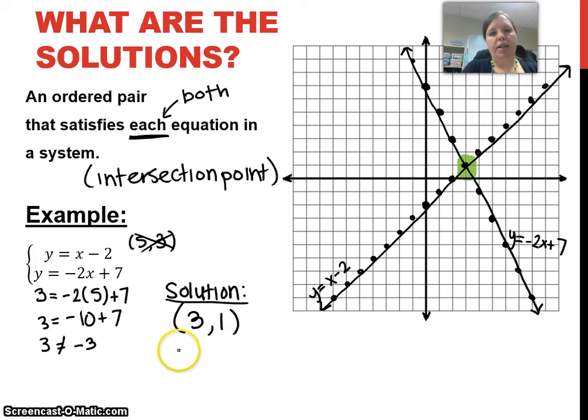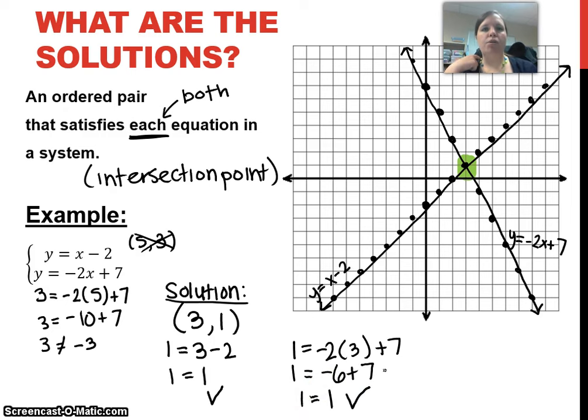If I look at that point now and I plug it into both equations, 1 equals 1, that's a check. And then I plug it into the second equation, so I plug in 1 for y and 3 for x, 1 equals negative 6 plus 7, which equals 1. So that is a solution because it works for both equations. As we can see from our graph, there's really only one point that works for both equations. So the solution is the intersection point.